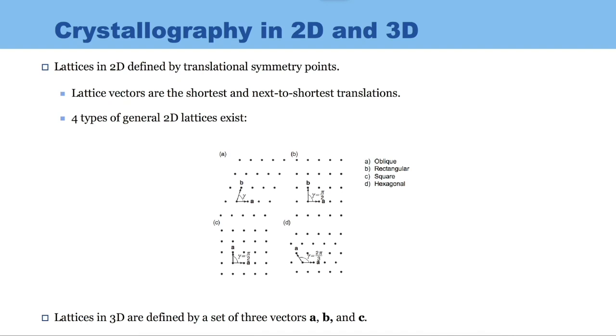Crystals are defined by their lattice vectors, which are different in two dimensions and three dimensions. In two dimensions, lattice vectors are the shortest and next to shortest translations from a given point. These lattice vectors are called A and B.